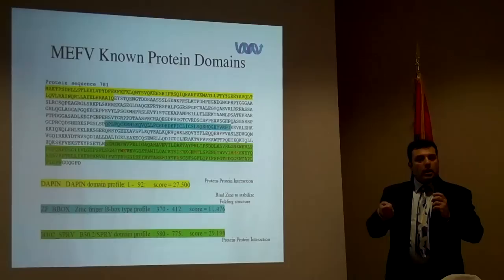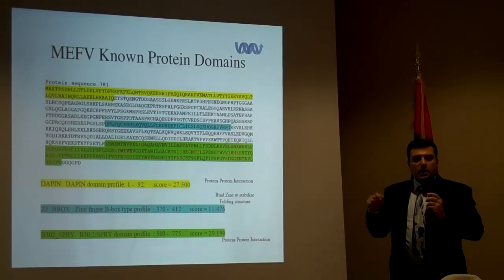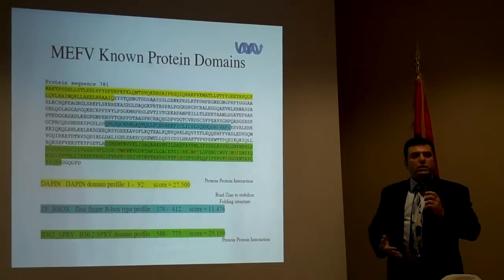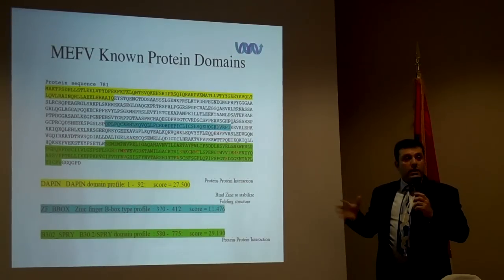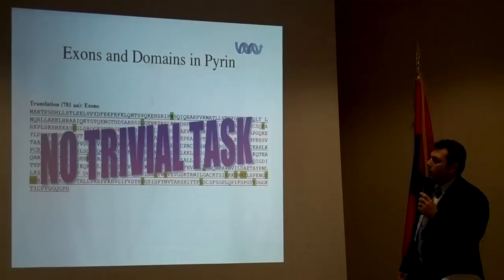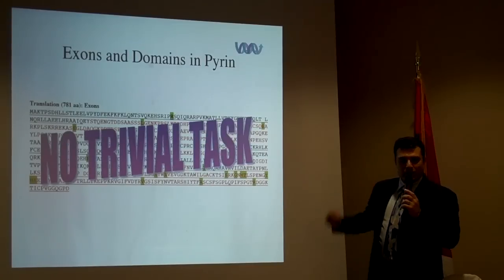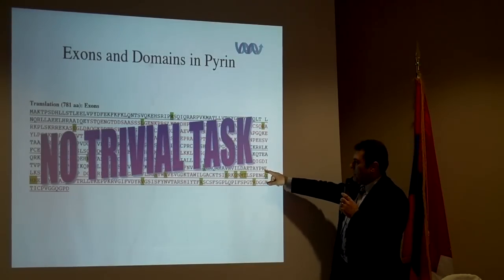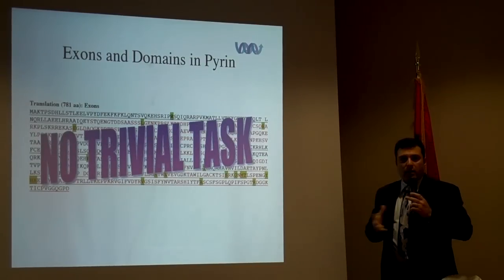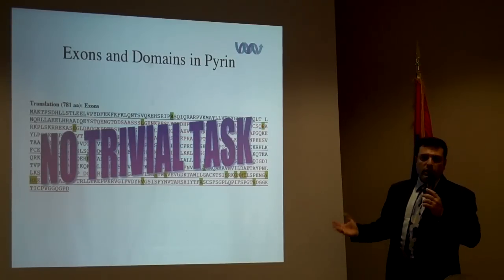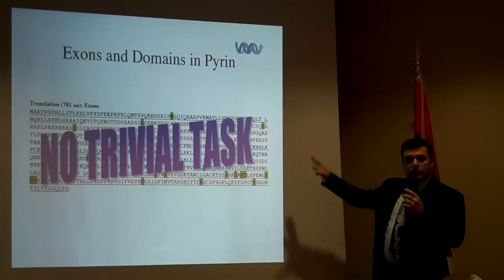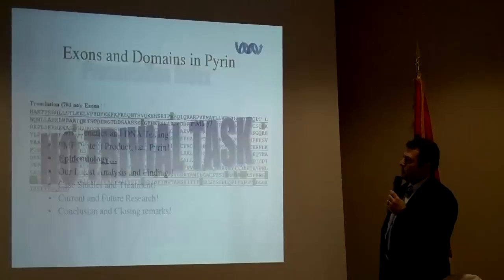Proteins have functional domains — like a lock and key — where the work gets done. However, some mutations fall outside these functional domains, yet they still cause FMF. We don't know why, and that's what we're working to find out. With different exons, different mutations, and different domains, it's very difficult to figure out a pattern. I'm working on bioinformatics approaches to identify these patterns for publication.